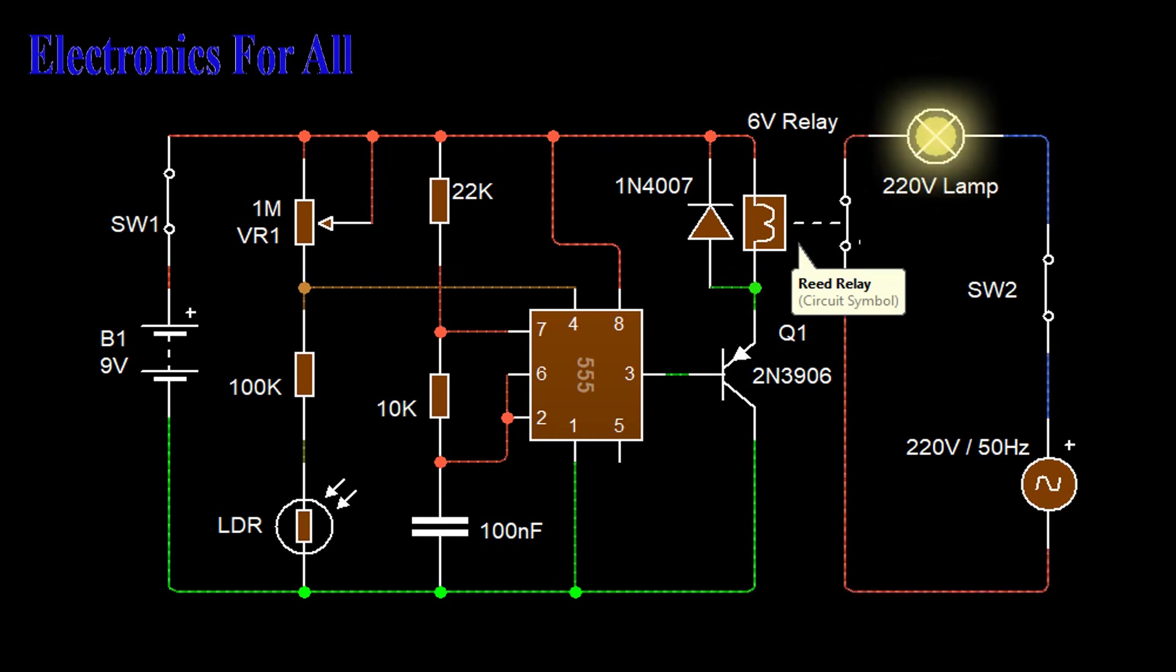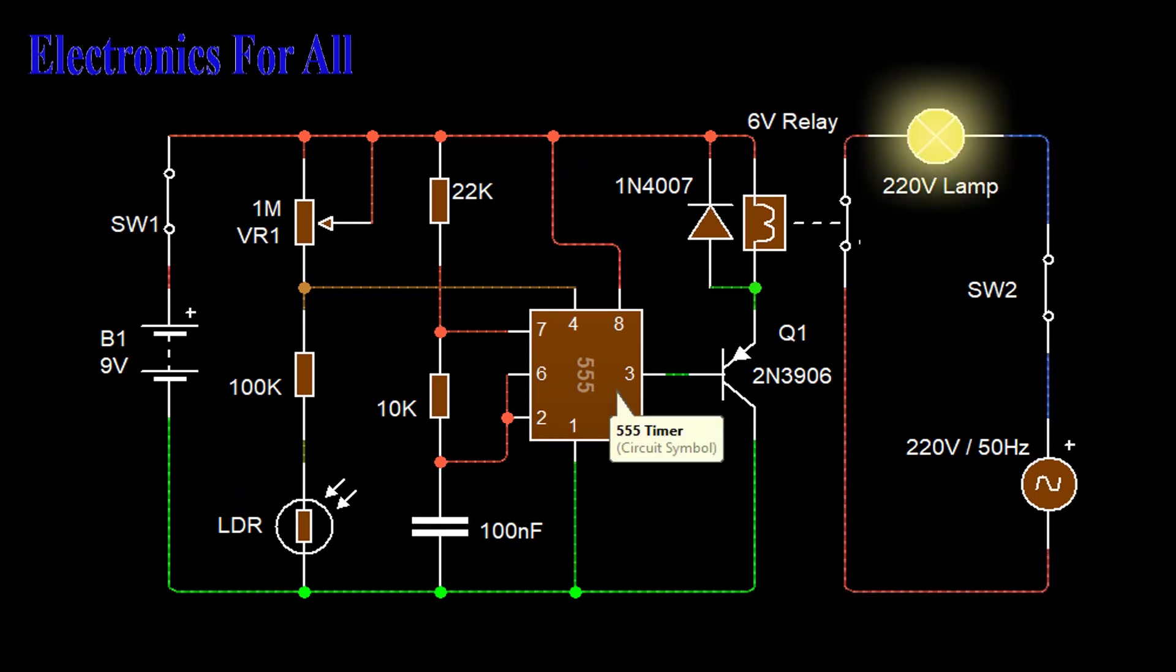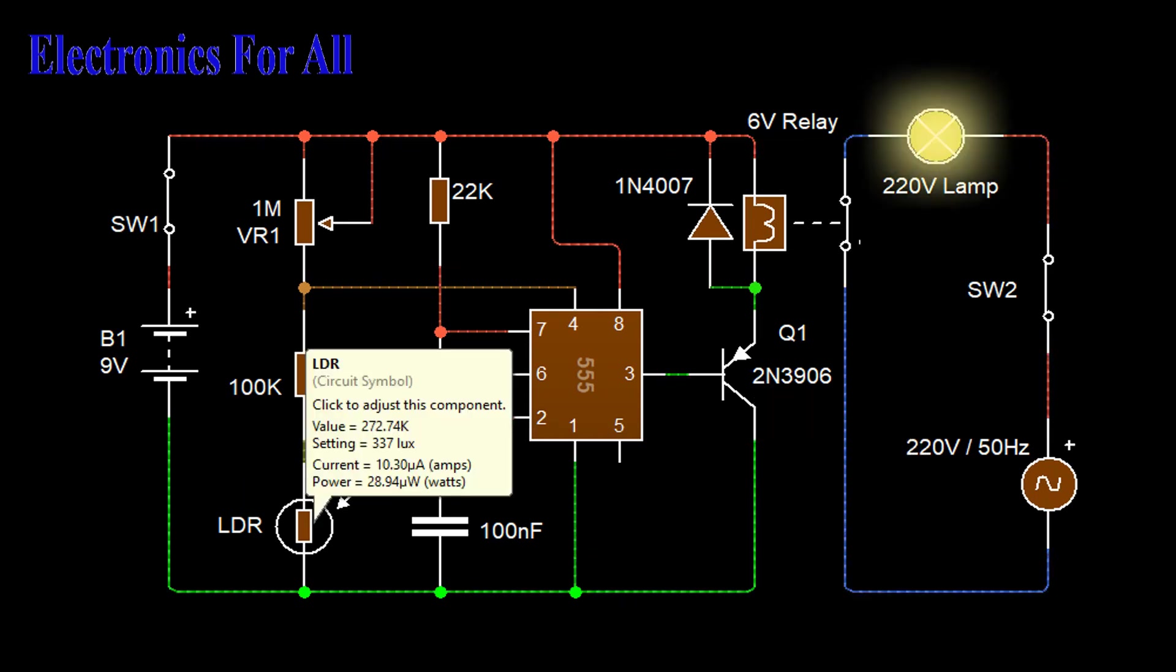The transistor here drives the relay because the relay driven by IC is not a good idea. The purpose of a diode connected in parallel to a relay coil is to avoid damaging some nearby components sensitive to high voltage. This voltage is generated in the coil when the current flow is interrupted.